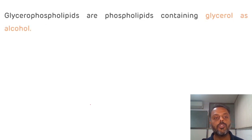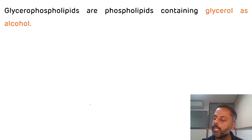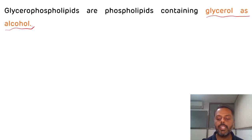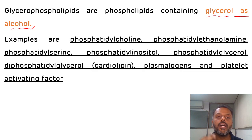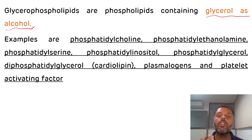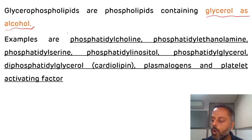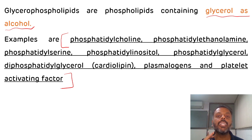Glycerophospholipids contain glycerol as alcohol. Examples include phosphatidylcholine, phosphatidylethanolamine, phosphatidylserine, phosphatidylinositol, phosphatidylglycerol, diphosphatidylglycerol (also known as cardiolipin), plasmalogens, and platelet activating factors.